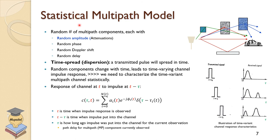The statistical and random nature of multipath is quite clear. We have a random number of multipath components, and each has a random amplitude or attenuation, random phase, random Doppler shift, and random delay. If the channel is narrowband, we also get time spread or dispersion — the received signal spreads over time. Due to all this randomness and time-varying nature of the channel, we need to characterize it using statistical techniques — hence the title: statistical multipath models.